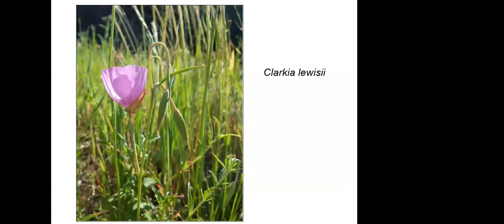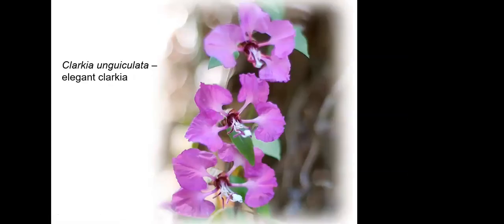Here's another Clarkia — Clarkia lewisii. This one has a nodding bud: see how the bud bends over. These nodding buds are distinctive of Clarkia lewisii. When they're ready to fully bloom, they'll turn upright, the calyx will open, and reveal a lovely light pink four-petaled flower. Then there's the elegant Clarkia — unguiculata — with incredibly complex petals that have a long attachment and then a wide portion at the top. It truly is an elegant Clarkia.